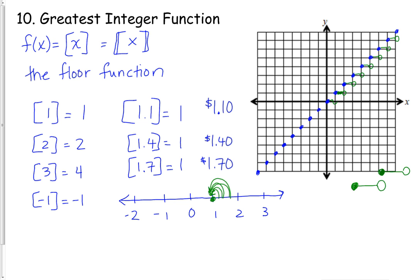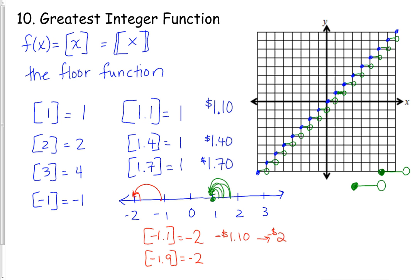If I fill the whole graph going to the left, something interesting happens with negative numbers. The greatest integer of negative 1.1 — going back to the greatest integer within it — is negative 2. Think of it like: if you owed someone $1.10 and had to pay in bills, you'd have to pay $2. So the greatest integer of negative 1.9 also goes back to negative 2. We always go to the left.